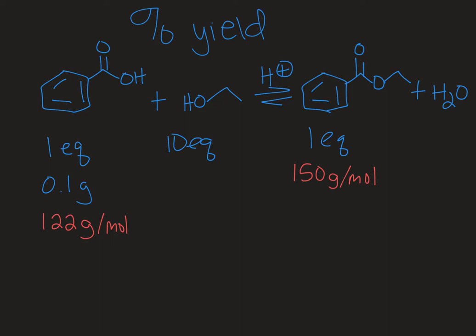The first thing you want to do when calculating percent yield is look for the limiting reagent. So our organic starting material is benzoic acid here and we have one equivalent of the benzoic acid and then we have 10 equivalents of the ethanol. And so this is going to be in excess since there's 10 molar equivalents. So this is our limiting reagent, the benzoic acid, and we see that for every one equivalent of benzoic acid we make one equivalent of our ester product.